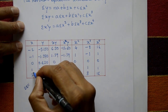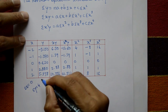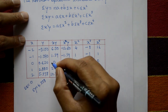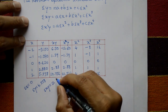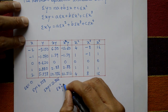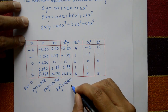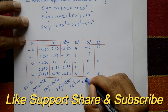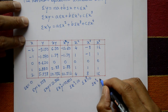Taking summations: Σx = 0, Σy = 4.338, Σxy = 21.326, Σx²y = 10.402, Σx² = 10, Σx³ = 0, and Σx⁴ = 34.